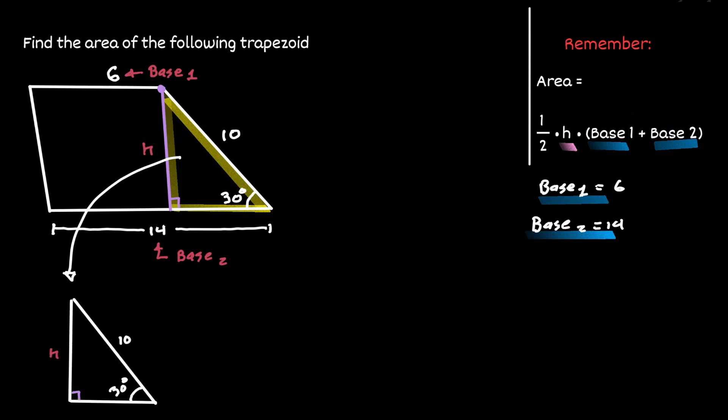If we let 30 degrees be our reference angle then h can be seen as the opposite and 10 can be seen as the hypotenuse. Notice what we have and what we want.